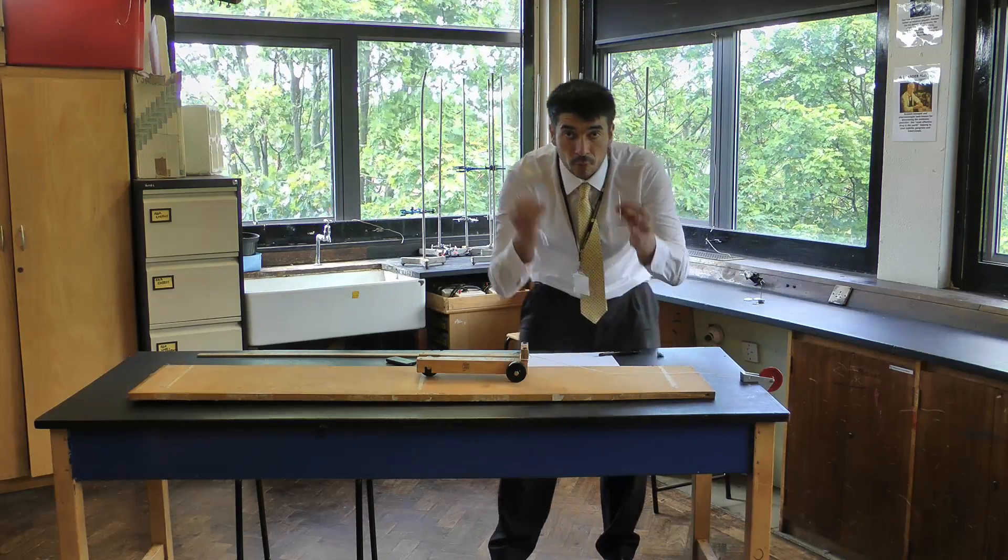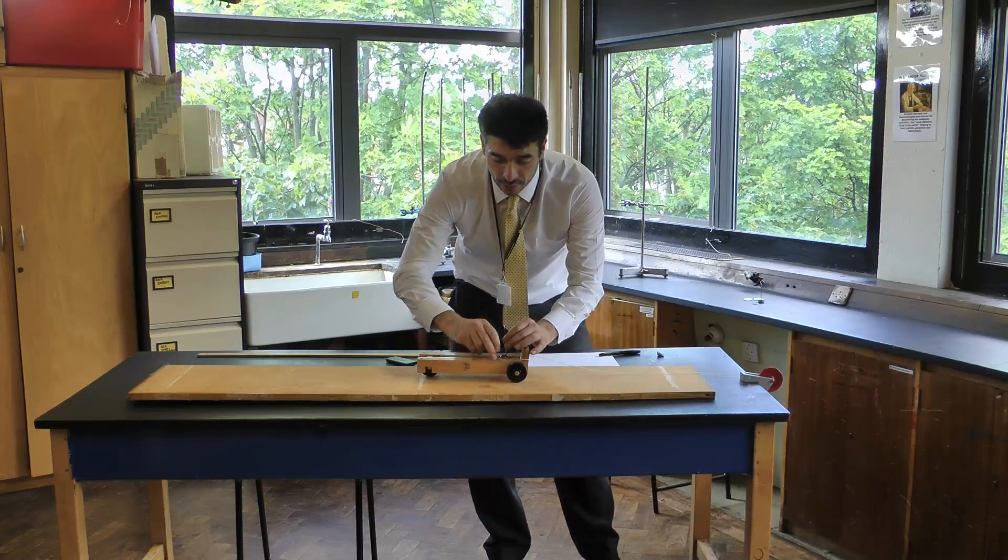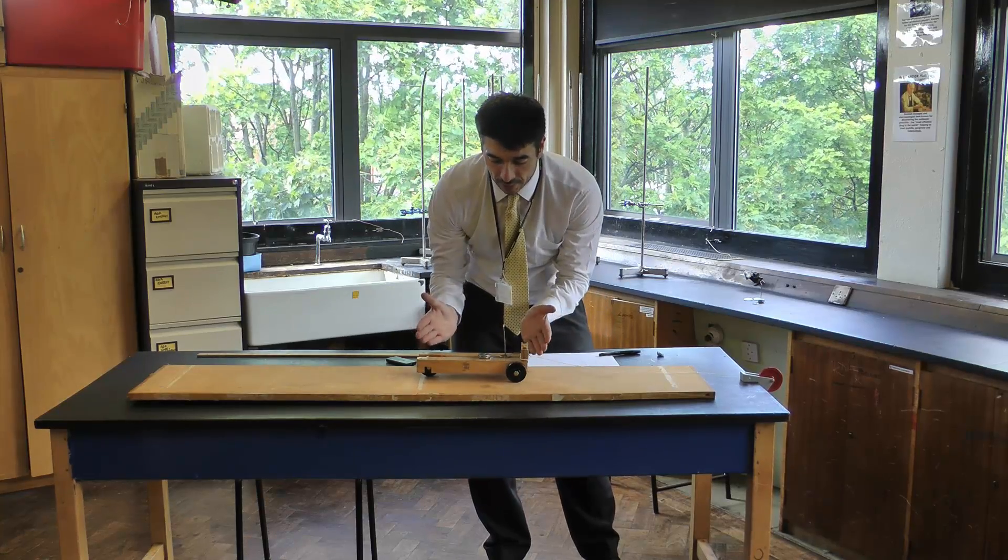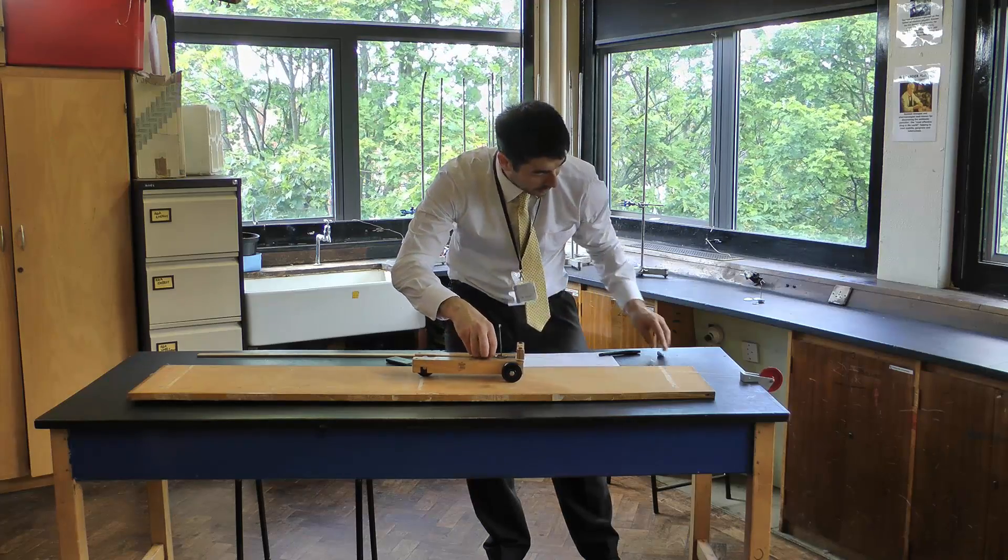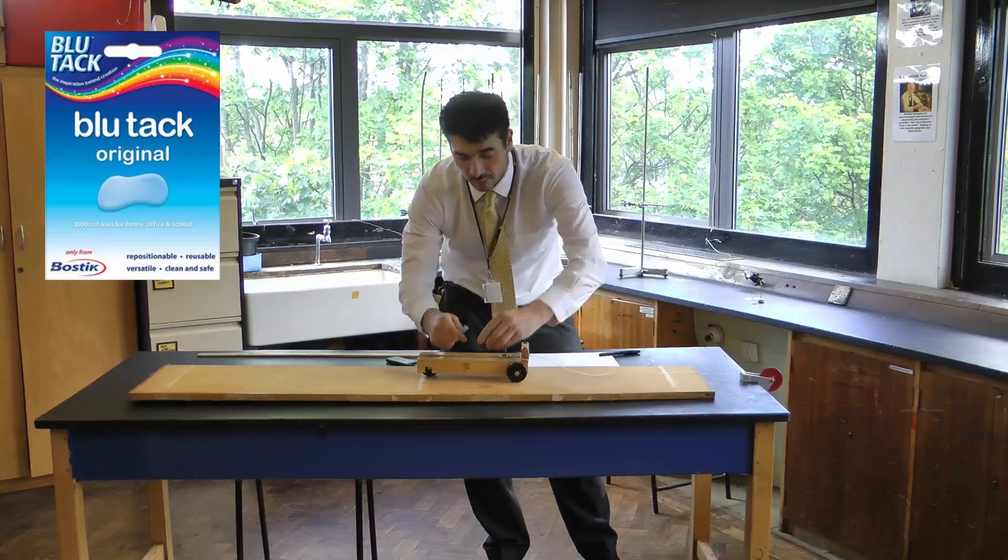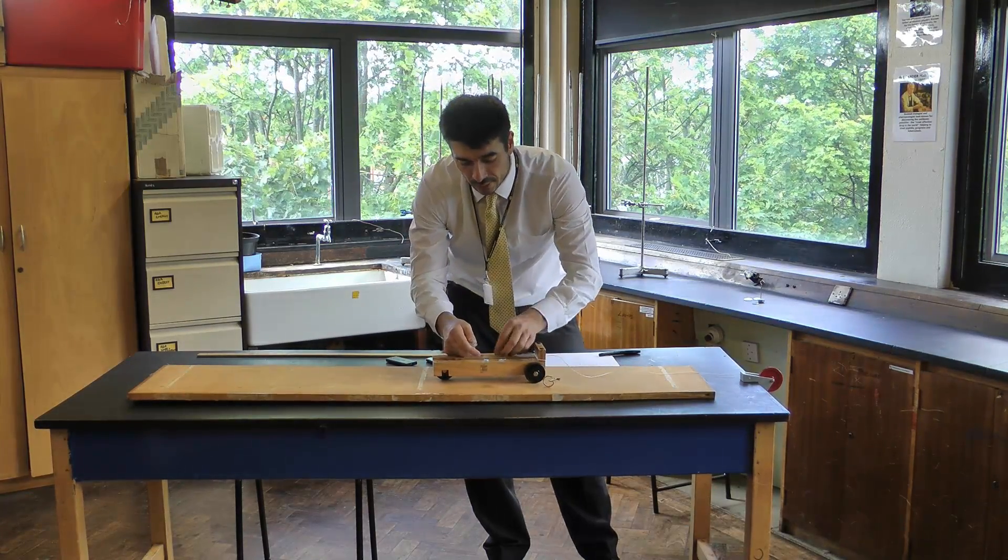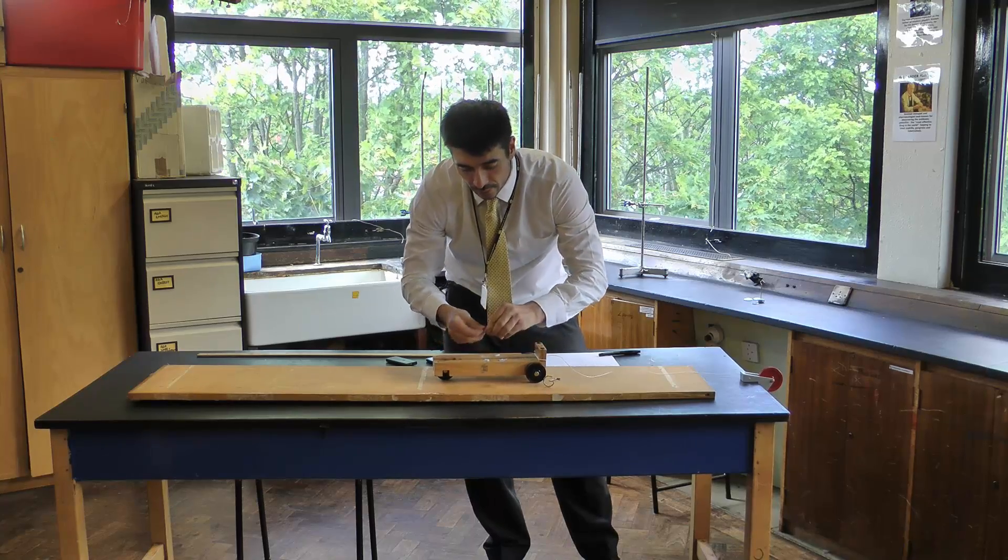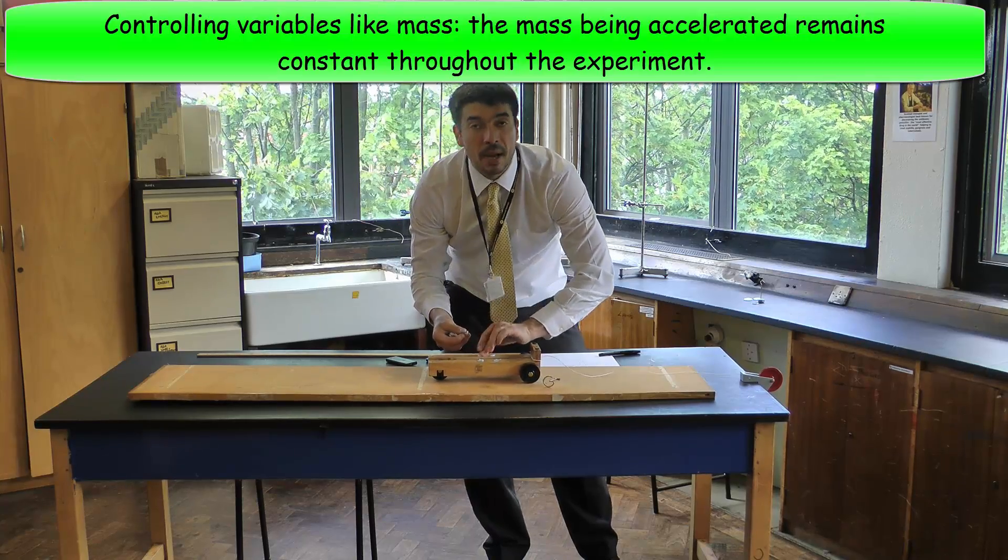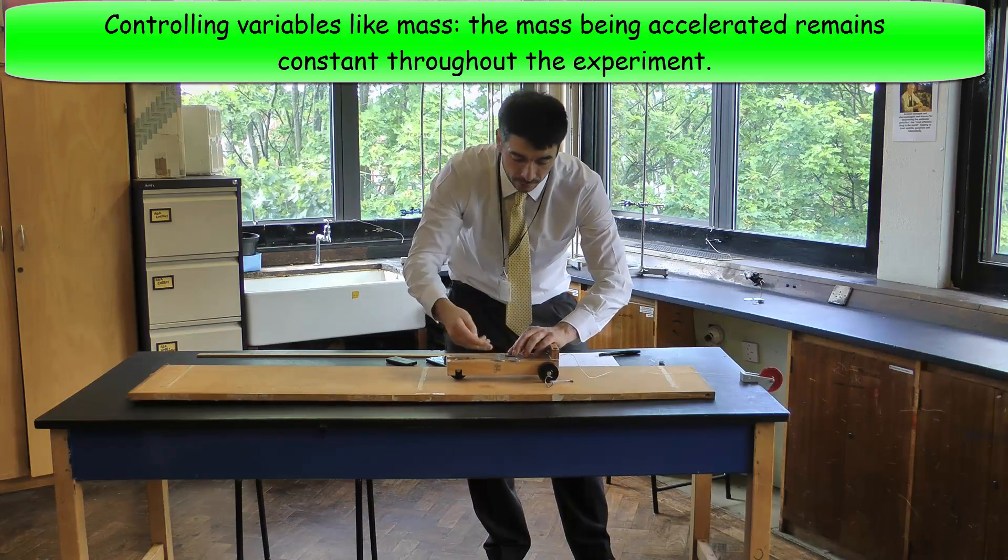So I want to get all the stuff that's being accelerated, including the hanger, and think that this is all the mass that's being accelerated. I'm going to attach these additional weights for the next part of the experiment to the trolley so that I can keep the mass constant. This is one of the control variables.